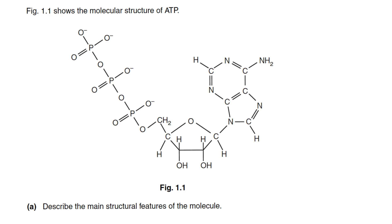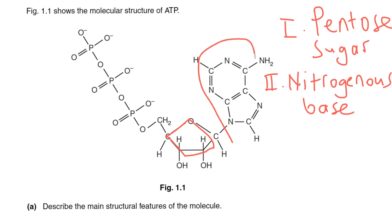Figure 1-1 shows the molecular structure of ATP. Describe the main structural features of the molecule. ATP has three parts. One, pentose sugar, here is the pentose sugar. Nitrogenous base, here is the nitrogenous base. And phosphate group, and there are three phosphates in ATP.